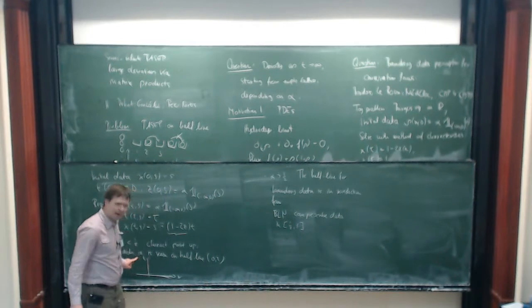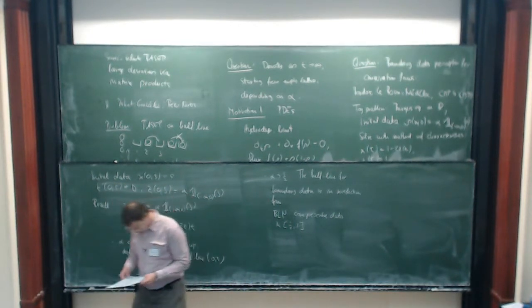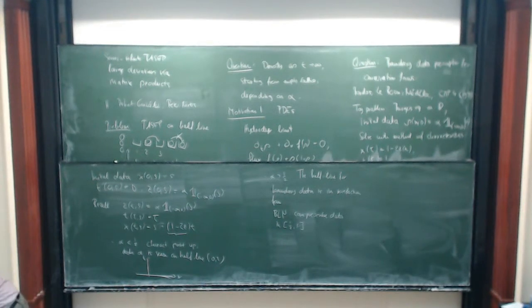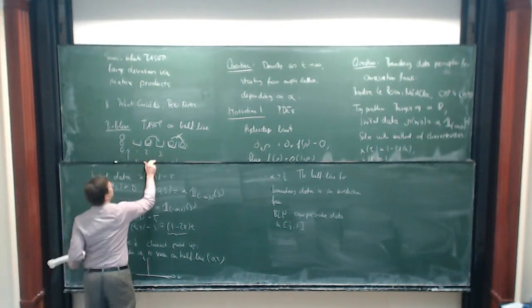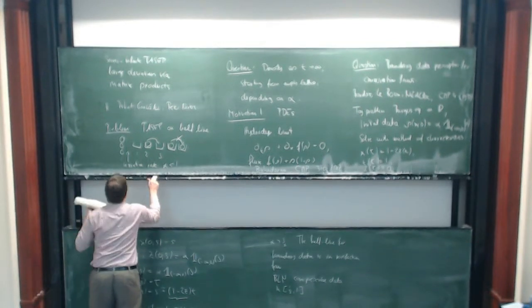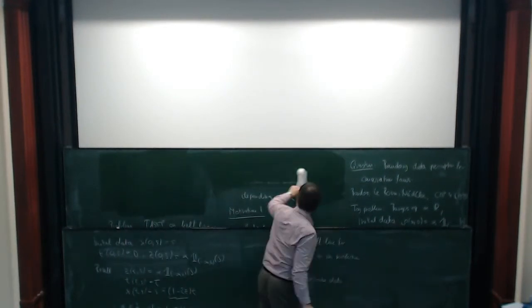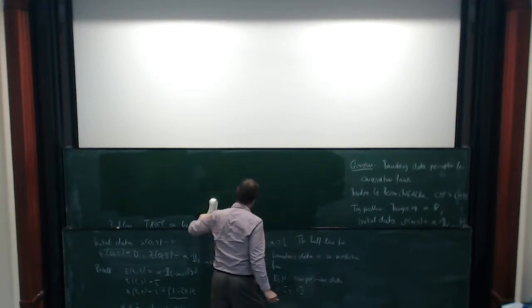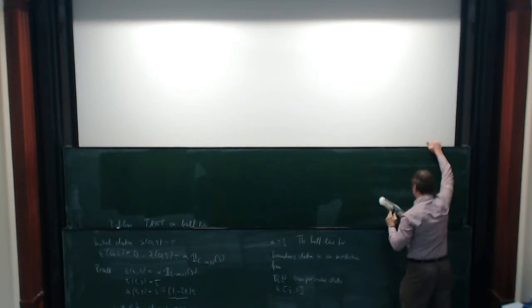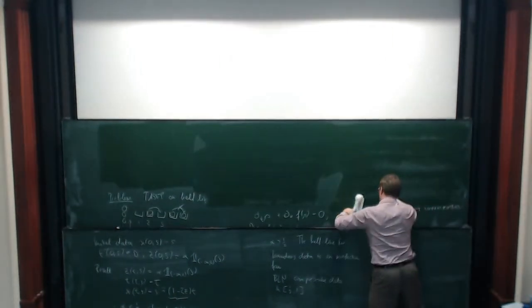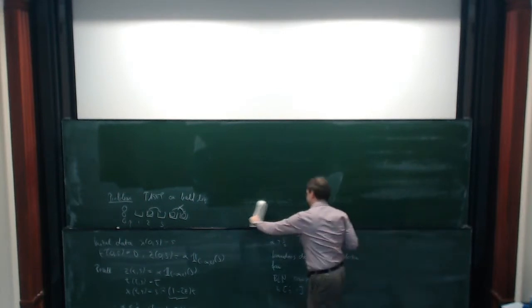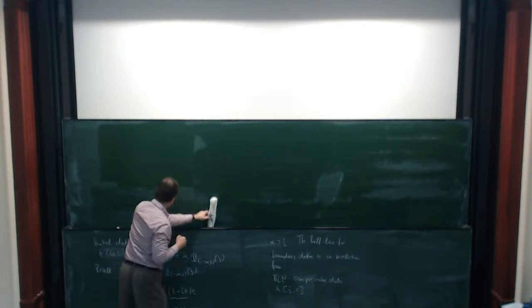From the PDE perspective, this comes from a vanishing viscosity approach. What I want to do is understand this from the point of view of particles and give a large deviation argument that explains this number one-half. The method we use is somewhat unusual: it's a fairly classical engine — the Gärtner-Ellis theorem — coupled to a particular tool called the matrix product ansatz.